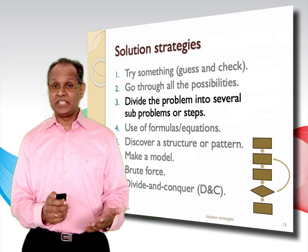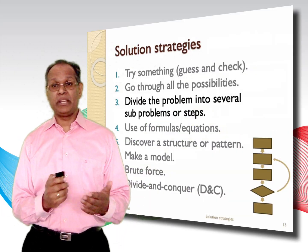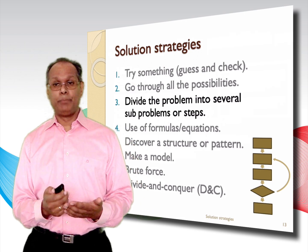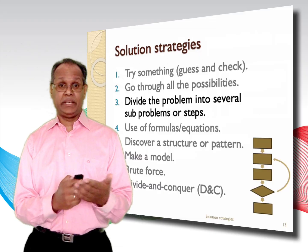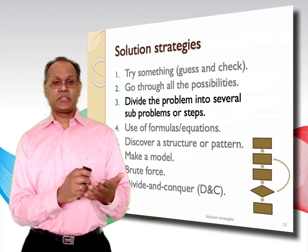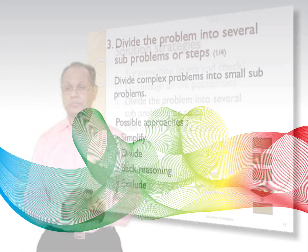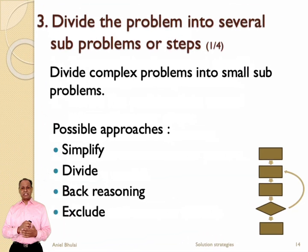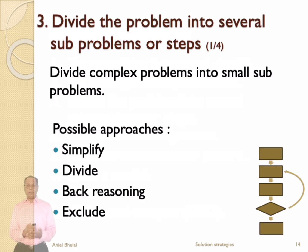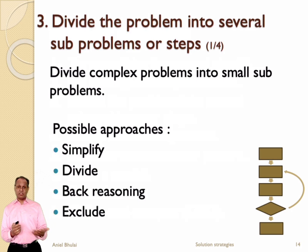The third solution strategy is to divide the problem into several sub-problems or steps. Sometimes a problem looks complex, but when you divide it into sub-problems you may solve it easily. To solve a problem this way, you can use several approaches like simplifying the problem, back reasoning, or exclusion. By combining a few of these approaches the complex problem will become clear and hence solvable.